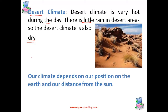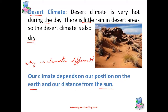Now, the question arises: why is climate different at different places around the world? The answer to this is that our climate depends on our position on the earth and our distance from the sun. These two things help us identify the type of climate that a particular place has.